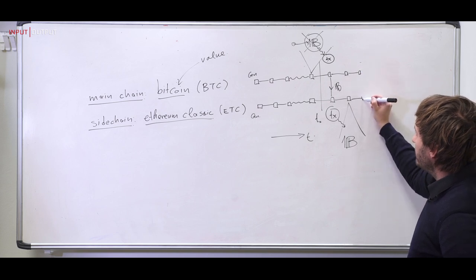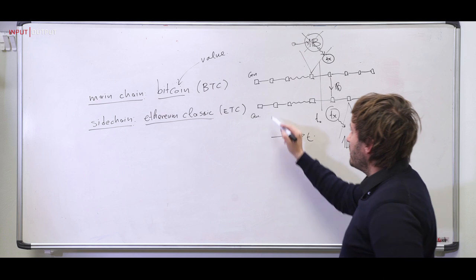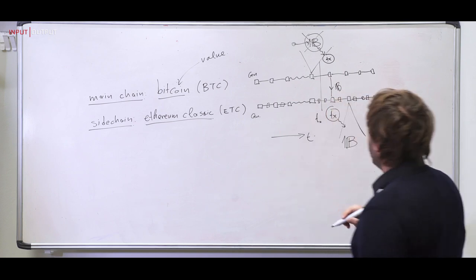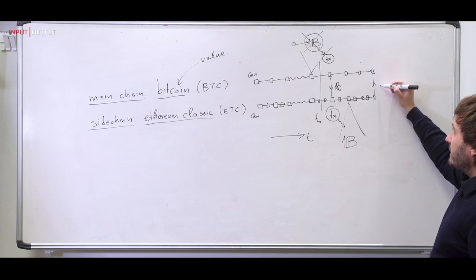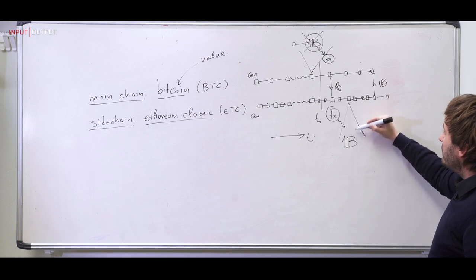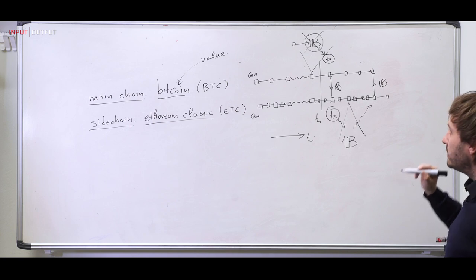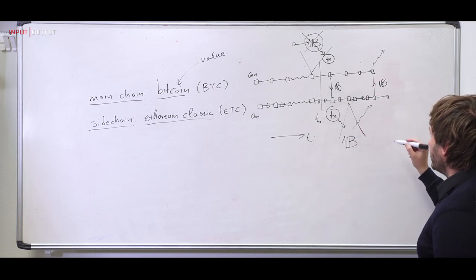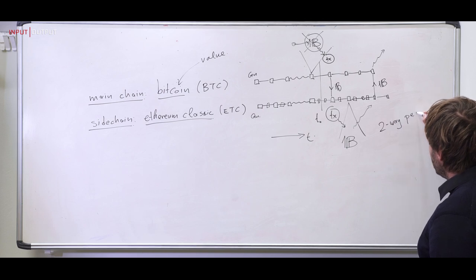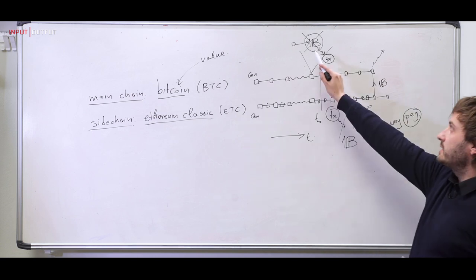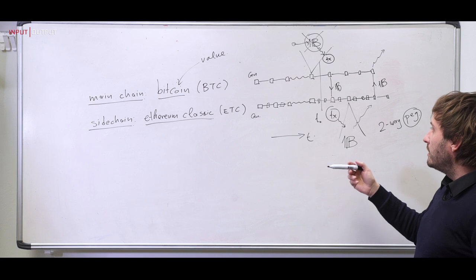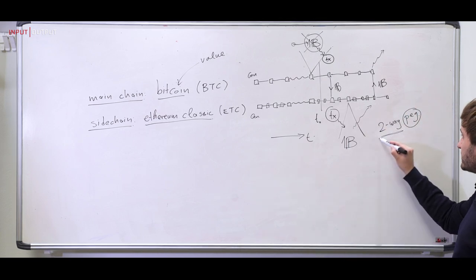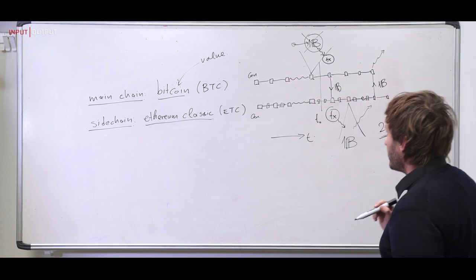These blockchains keep evolving and creating blocks. Ethereum blocks are created much more often than Bitcoin blocks, so you can represent that visually. At some point, I can move that amount back. The Bitcoin is destroyed on the Ethereum Classic chain and appears again on the Bitcoin blockchain. This is what we call a two-way peg — one Bitcoin on the Bitcoin blockchain is worth one Bitcoin on the Ethereum Classic blockchain. They're the same unit of account, and the two-way means I can move them back and forth.